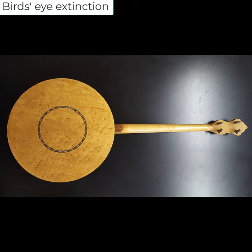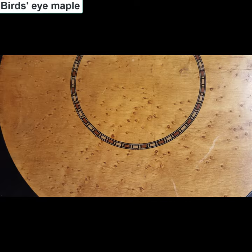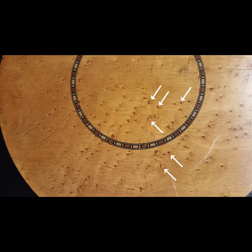Bird's eye extinction is a type of extinction that you see typically in muscovite and biotite. It's named after bird's eye maple. If you haven't seen bird's eye maple, this is the back of one of the banjos that I own — the resonator is made out of bird's eye maple. If we look at a close-up of the back, you'll see these little dots. Those are little bird's eyes — little imperfections in the wood grain, so when they polish they have this little dot structure.